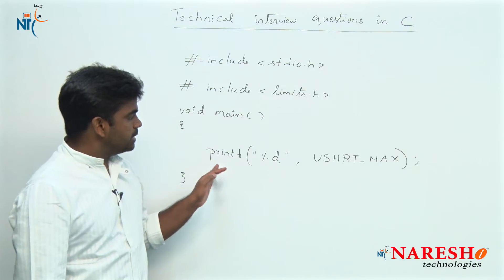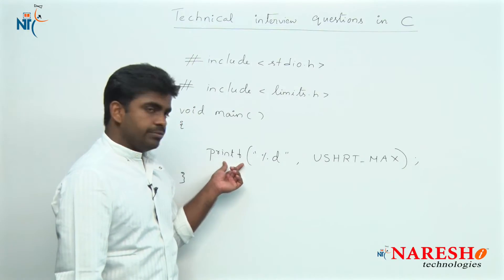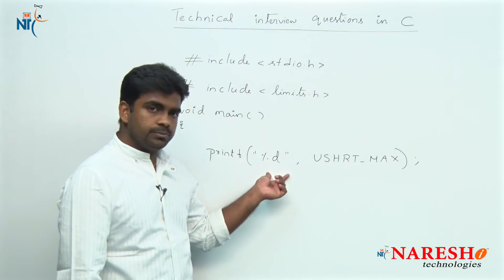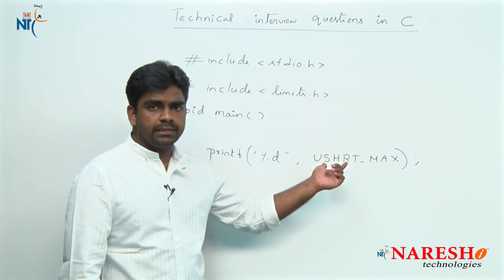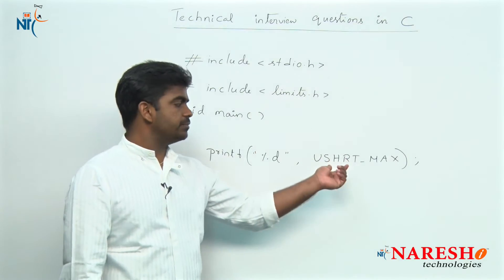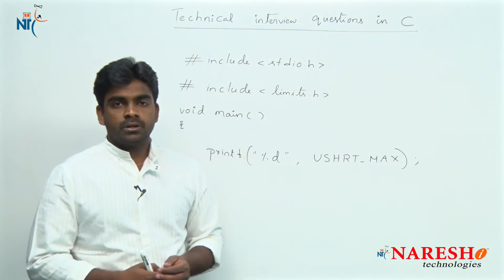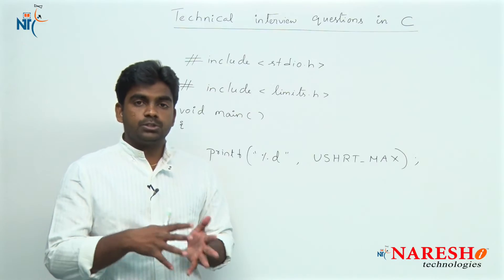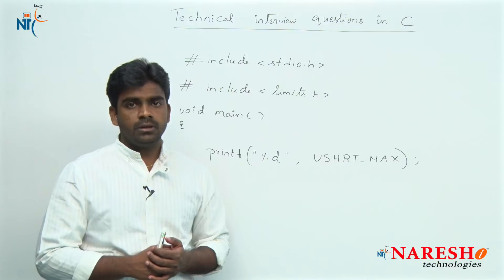In the question they have given printf and we are printing the value of a predefined variable. This variable is already defined in the limits dot h header file and it will give the unsigned short maximum limit. What is the maximum value we can store into a variable that is unsigned short.